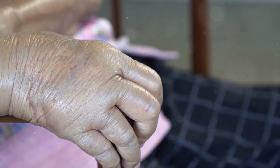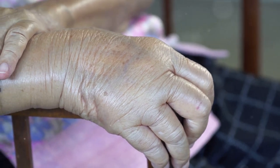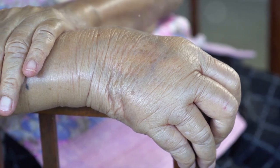This puffiness can manifest in various parts of your body, including your legs, ankles, hands, face, or even around your eyes.